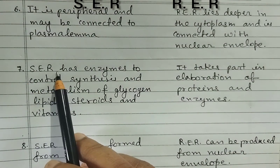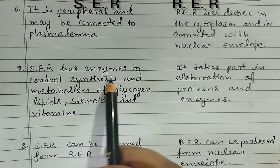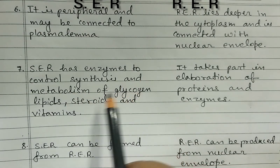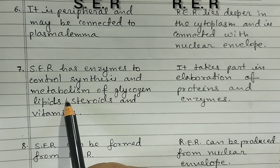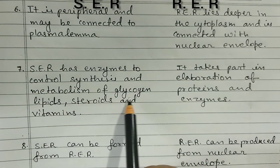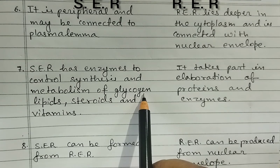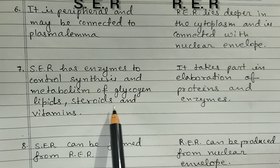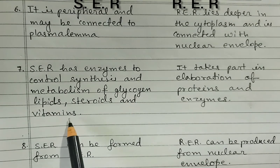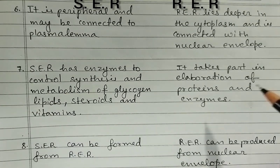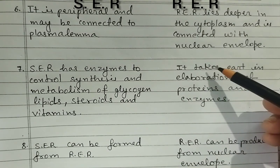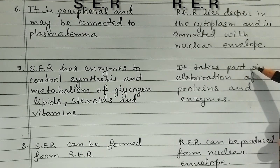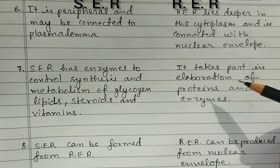Seventh difference — smooth endoplasmic reticulum has enzymes to control synthesis and metabolism of glycogen, lipids, steroids, and vitamins. In rough, it takes part in elaboration of proteins and enzymes.